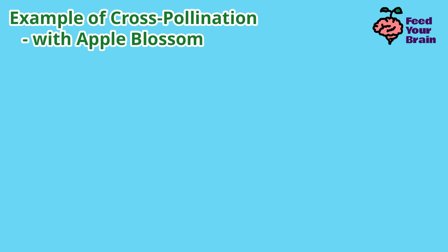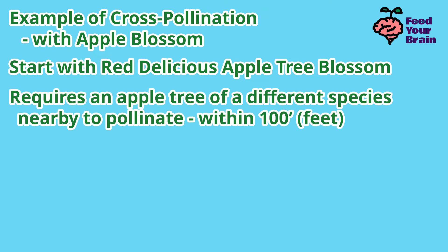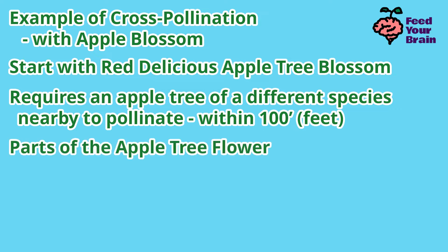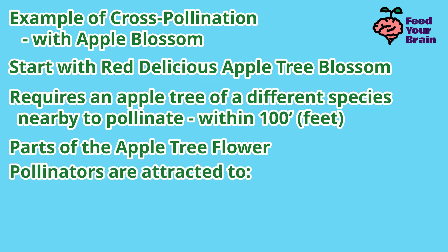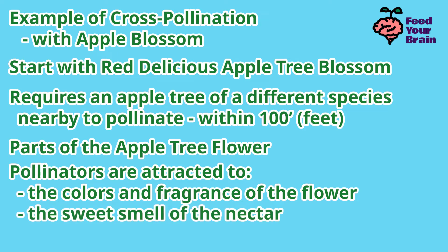An example of cross-pollination is with the apple blossom. Start with a red delicious apple tree blossom. This requires an apple tree of a different species nearby to pollinate, within 100 feet. Then we look at the parts of an apple tree flower. Pollinators are attracted to the colors and fragrance of the flower and the sweet smell of the nectar.